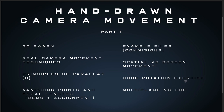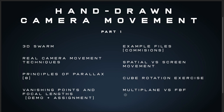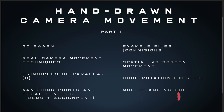Building off the 3D swarm, we have a cube rotation exercise to understand how a cube behaves in 3D space — helpful when animating building interiors and moving your camera through them. We also cover multi-plane versus frame-by-frame, with more focus on FBF but showing multi-plane as an option in certain situations, plus vanishing points and focal lengths. That's part one of hand-drawn camera movement — and we're not even finished.